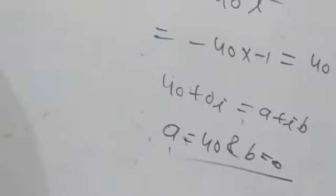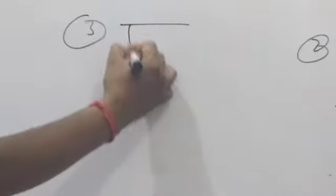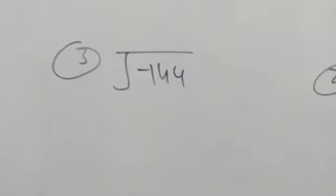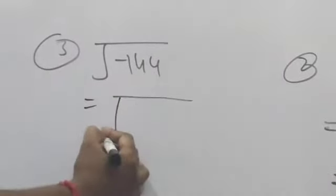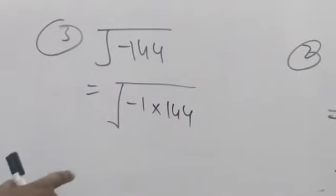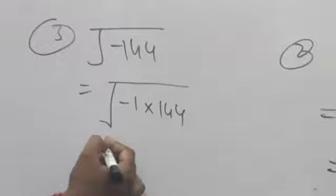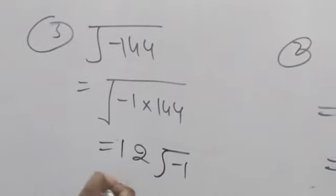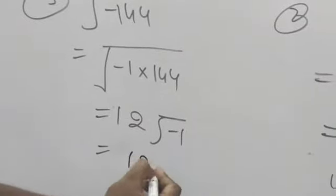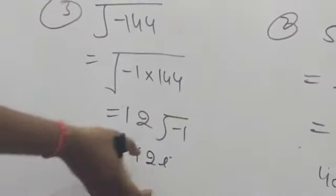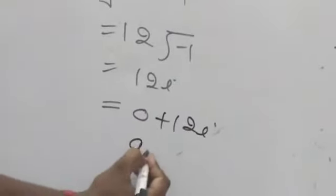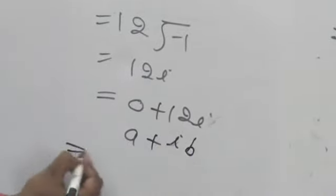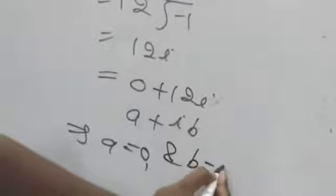Now question number 3: √(-144). First of all, we can write √(-1 × 144). The square root of 144 is 12, and √(-1) = i. So √(-144) = 12i. We write this in A + iB form as 0 + 12i. Comparing: A = 0 and B = 12.